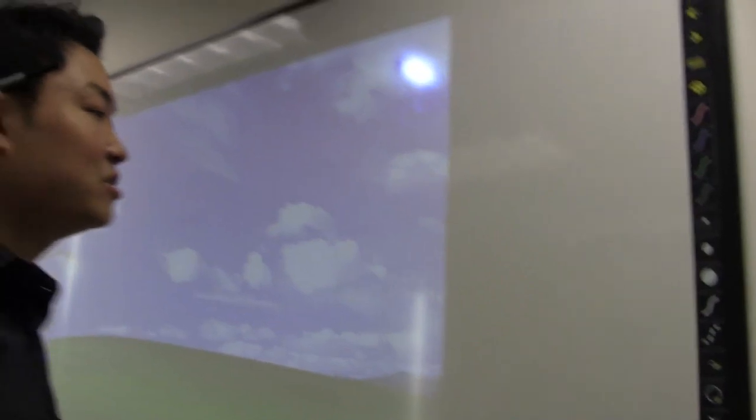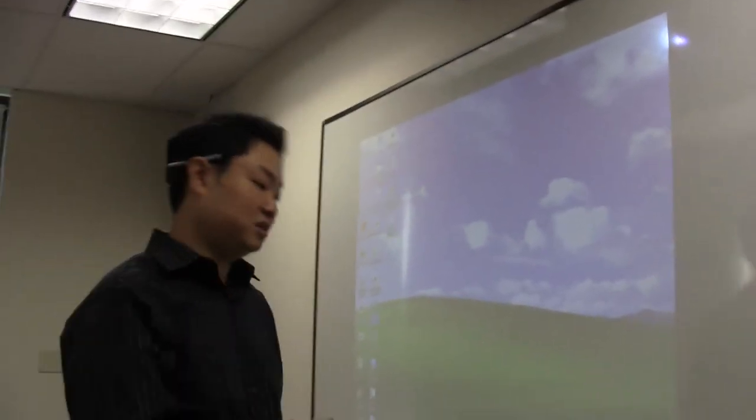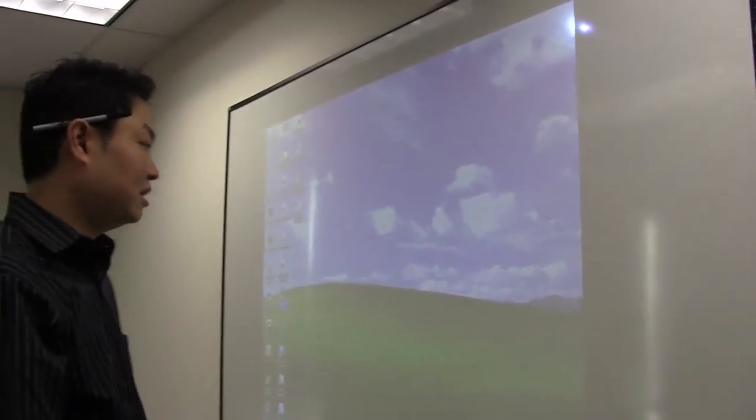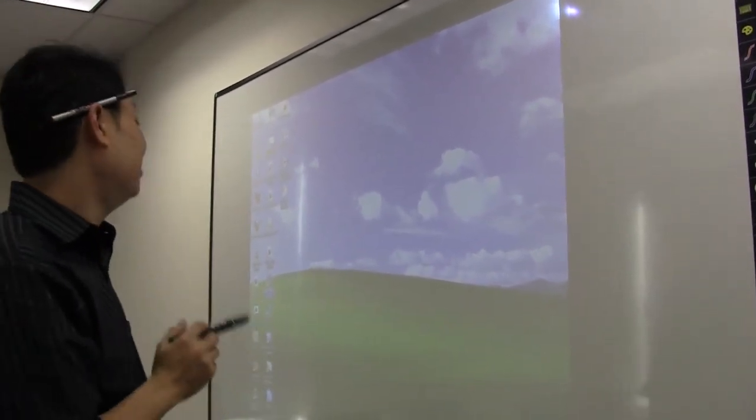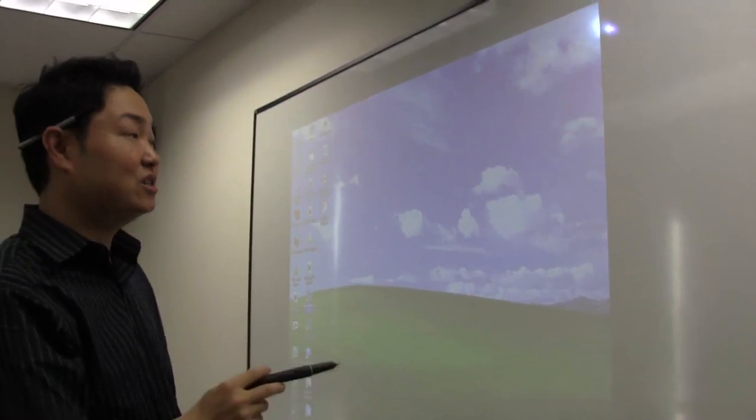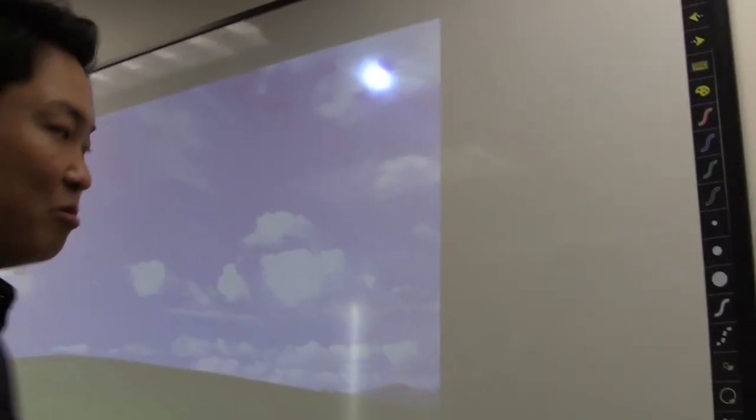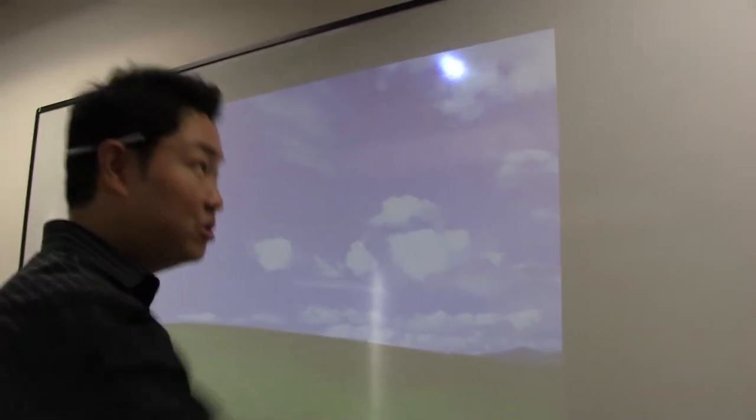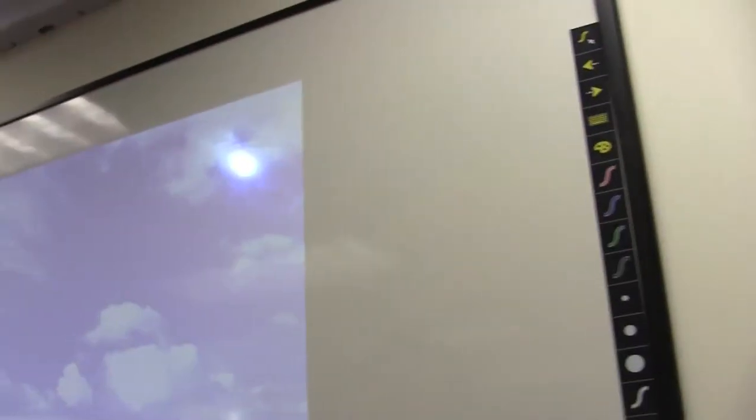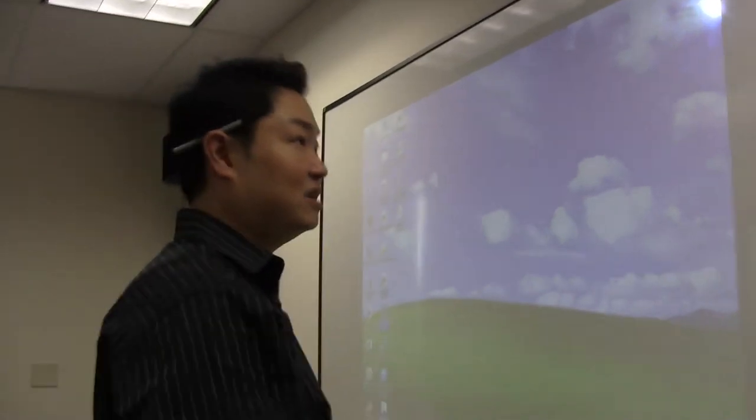The next thing is, in the marker mode, we can also set up whiteboards using the tools here. Remember that there are two different modes using a PolyVision board. One is the cursor mode, basically using the pen as a mouse. And in the marker mode, which you can draw or write on the board.